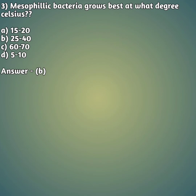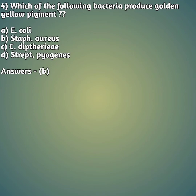Moving to our third question: mesophilic bacteria grow best at what degree Celsius? Option A: 15 to 20, option B: 25 to 40, option C: 60 to 70, option D: 5 to 10. The right answer is option B — mesophilic bacteria grow best at 25 to 40 degrees Celsius.